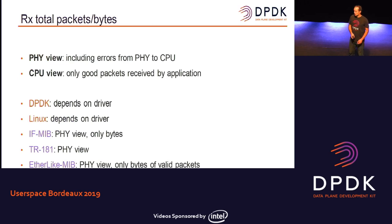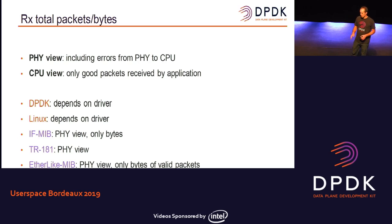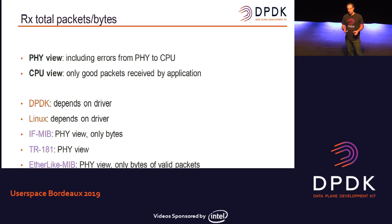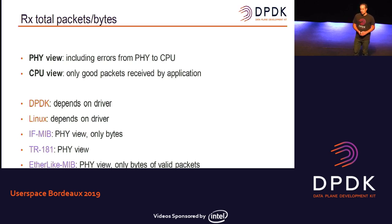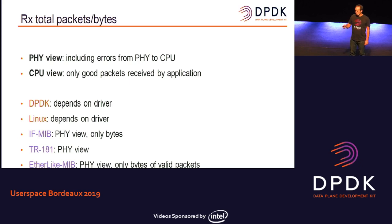When counting the total packets received, there are two schools. One is to see it from the link layer, where you count everything you receive from the wire, including bad packets and errors. Or you have the CPU view from the application and you see only the packets you really receive in your application. For now, it's not clear in DPDK and Linux which view we prefer. But in all the MIBs they prefer to see it from the link layer — they count everything. It's open to discussion.